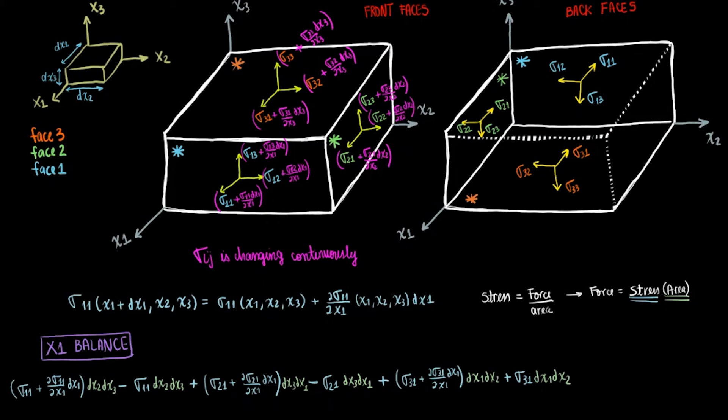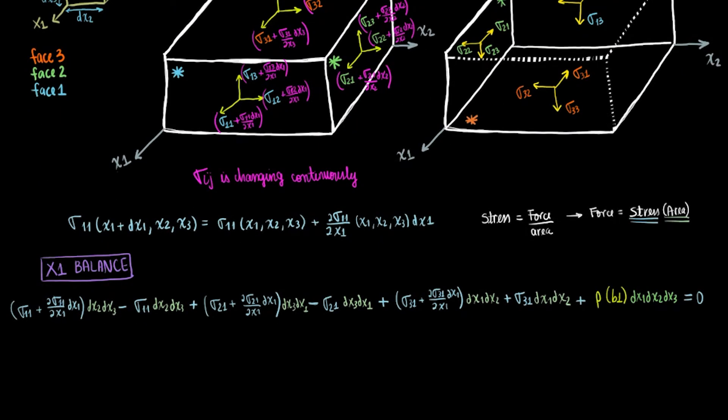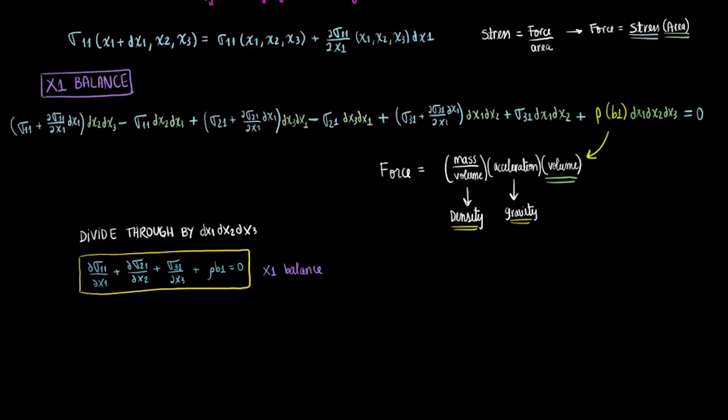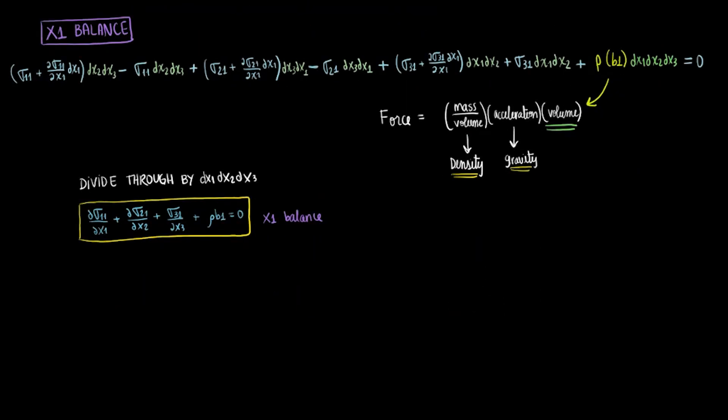Remember to also incorporate a component for the body force. This body force component is basically the density, which is mass over volume, times the body force, which in this case we can say is the gravity acting along the body. But to turn this into a force, we need to multiply the body force component by the cube volume we had mentioned earlier. Once we divide all terms by the volume, dx1 dx2 dx3, we get the final force balance along x1.